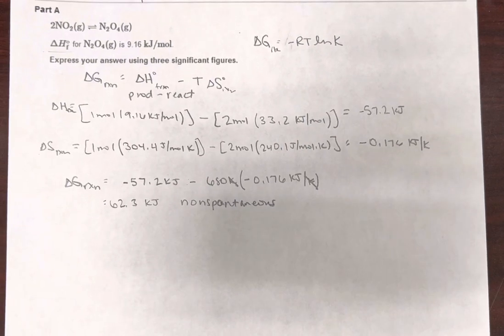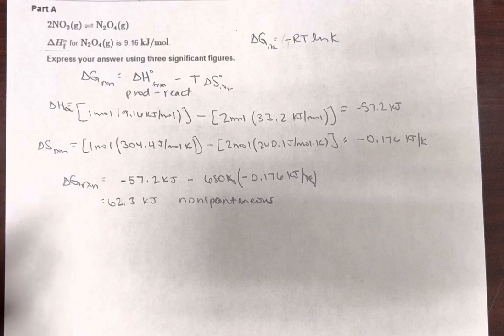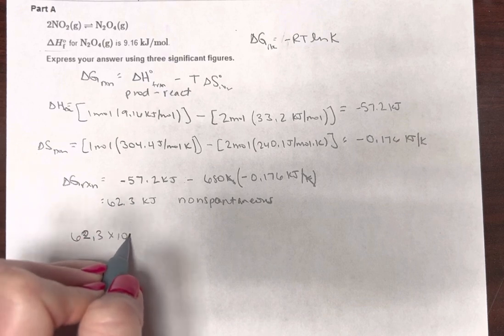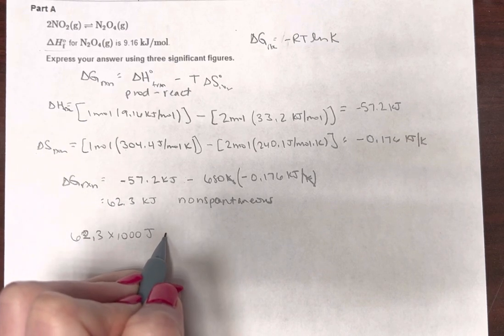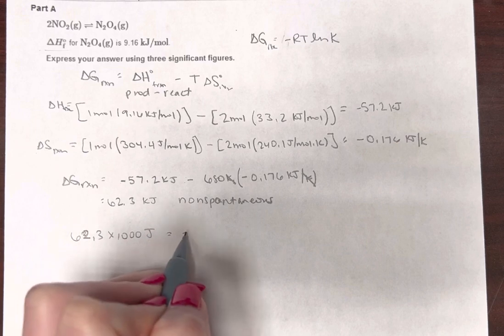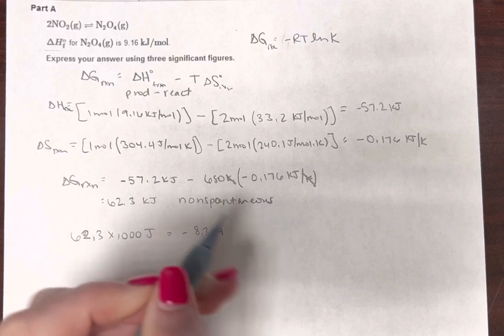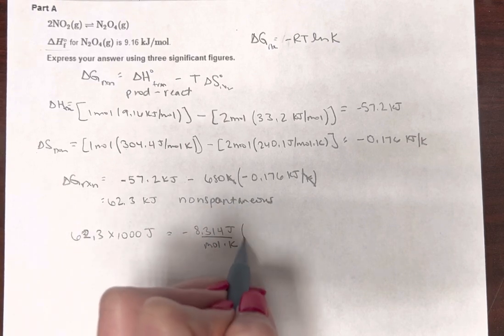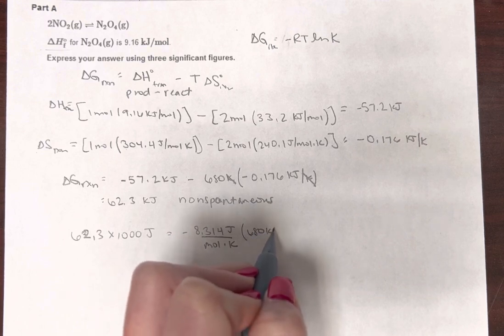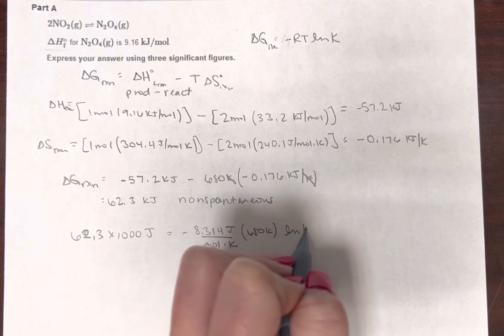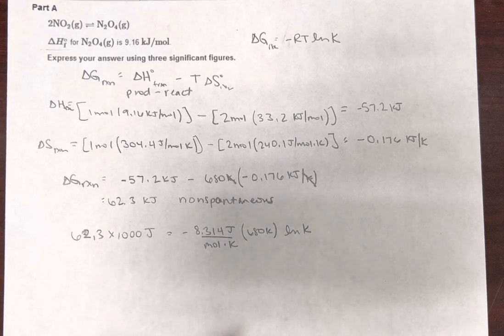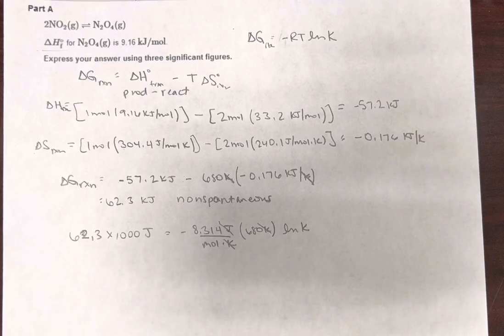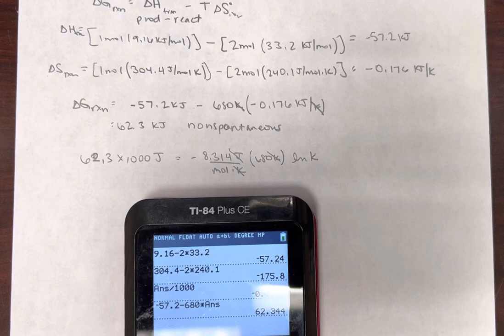Now we can use this relationship. So delta G, 62.3, not 63.2, let's go ahead and make that joules, equals negative R, 8.314 joules per mole Kelvin. Our temperature here is 680 Kelvin, and we're going to have natural log K. And remember, these moles are going to go away as part of the equilibrium constant, you just kind of have to trust me on that.